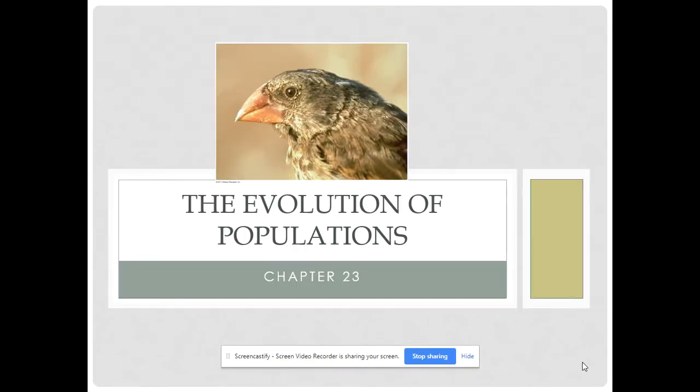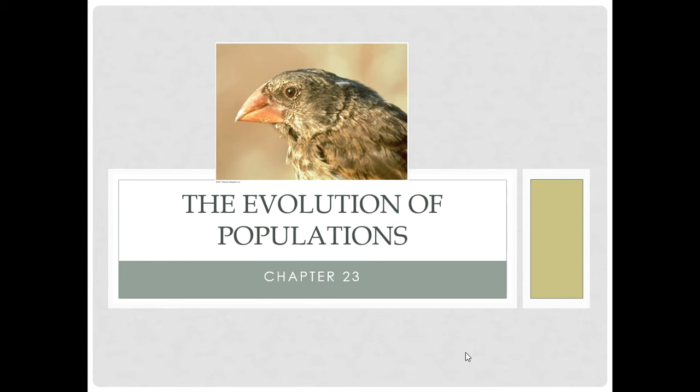Now that we've talked about what evolution is and what it might look like, we're going to start moving into how this actually occurs within a population. It's always important to remember — and I'm going to keep reminding you — evolution occurs at the population level, not the individual level. No individuals are evolving. They either survive and reproduce or they die. However, the population as a whole over generations will change and thus evolve.